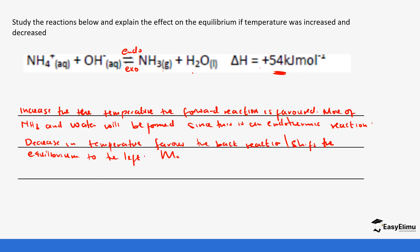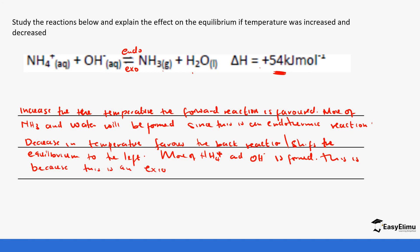A decrease in temperature favors the back reaction and shifts the equilibrium to the left, so more ammonium ions and hydroxide ions are formed, because the back reaction is exothermic.